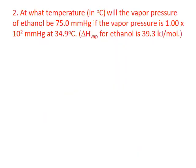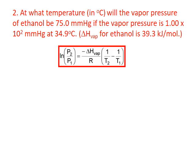In the second problem we're asked what temperature in degrees Celsius will the vapor pressure of ethanol be 75 millimeters of mercury, given that the vapor pressure is 100 millimeters of mercury at 34.9 degrees Celsius. We're also given the enthalpy of vaporization for ethanol as 39.3 kilojoules per mole. This fits the two-point form of the Clausius-Clapeyron equation.